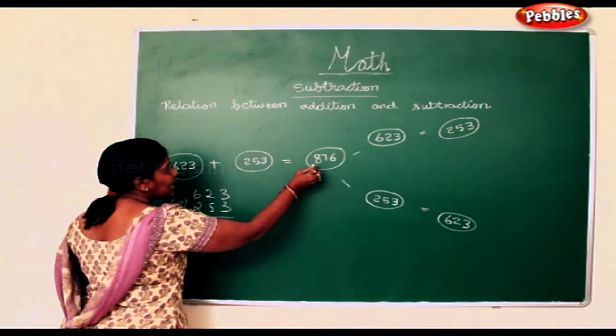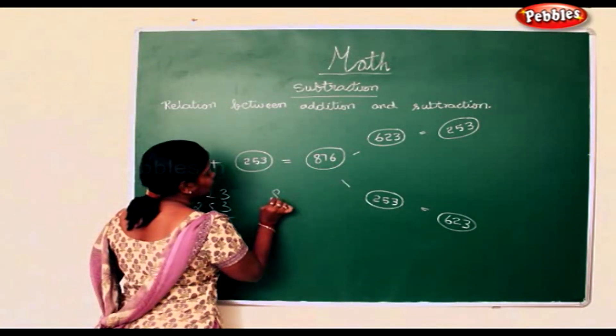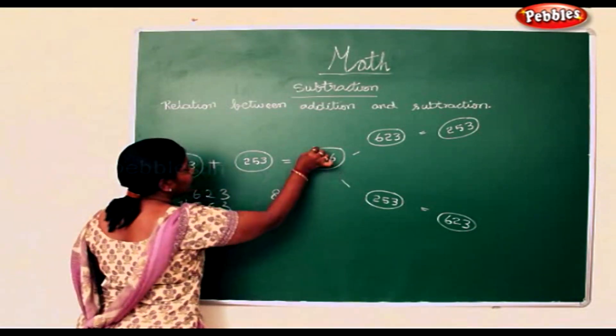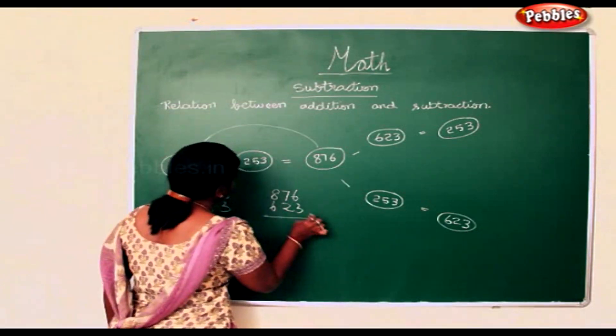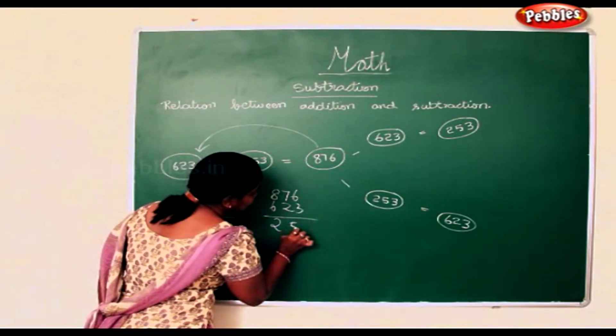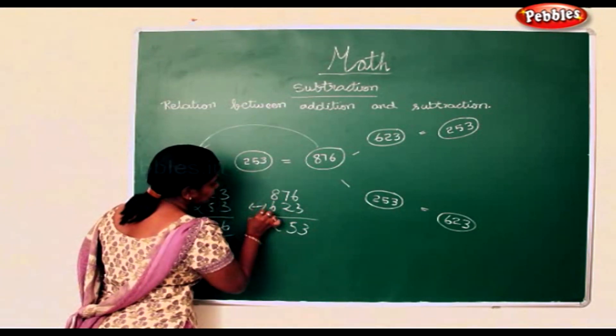Now, if you subtract 876 from 623, you will get 253 as the answer.